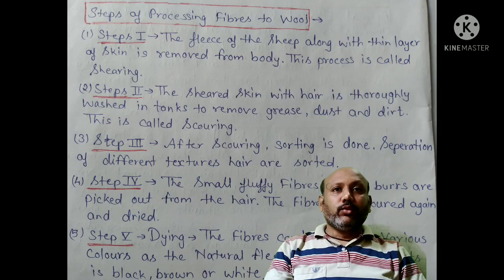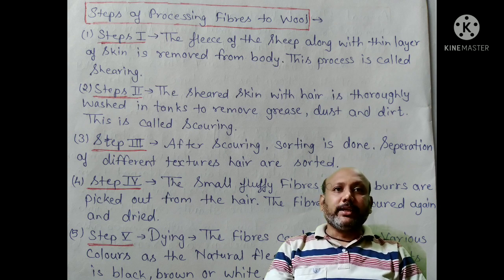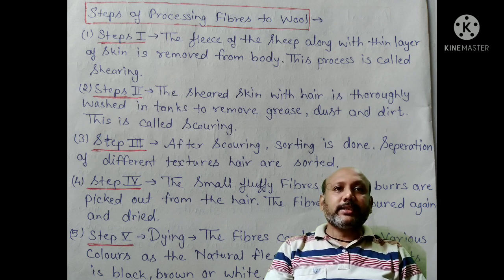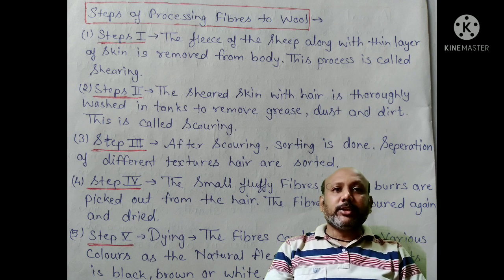Steps of processing fibers to wool. Step 1: The fleece of the sheep along with a layer of skin is removed from the body. This process is called shearing. Step 2: The sheared skin with hair is thoroughly washed in tanks to remove grease, dust and dirt. This is called scouring. Step 3: After scouring, sorting is done — separation of different textures of hair.